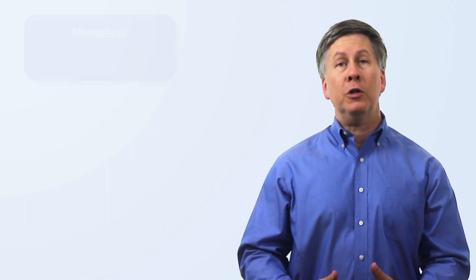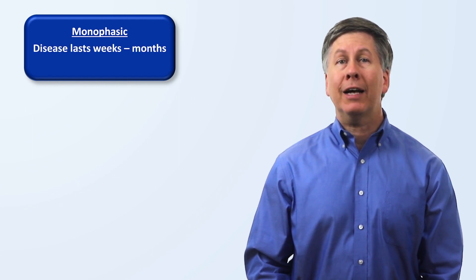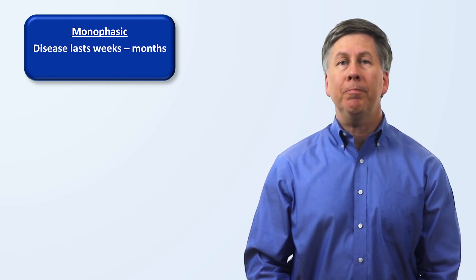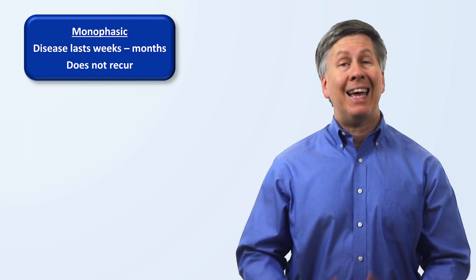When it comes to the prognosis of adult-onset Still's disease, there are three typical patterns to the disease course. The first is monophasic, in which there is a single acute flare that lasts from weeks to as long as a year, but then goes into remission and never recurs.